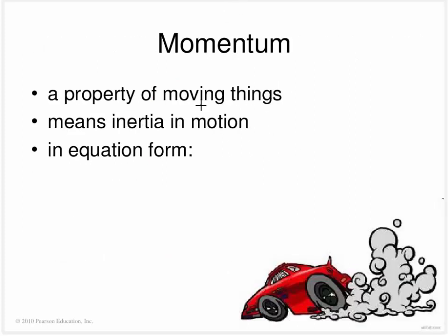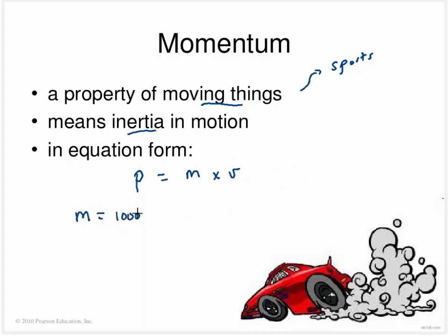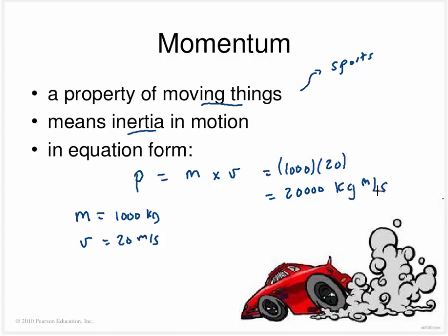What is momentum? Momentum is a property of moving things — there are analogies in sports or politics where one team 'has momentum,' meaning they're moving and want to keep moving. It's kind of like inertia in motion. In equation form, momentum is given the symbol P, equal to mass multiplied by velocity. For example, a car with a mass of 1,000 kilograms and a speed of 20 meters per second has momentum of 20,000 kilogram meters per second.